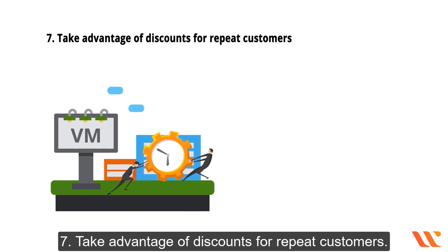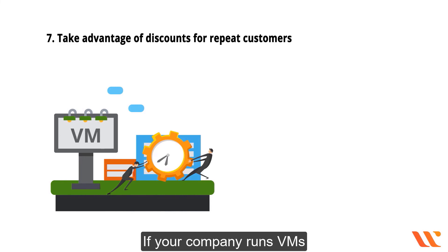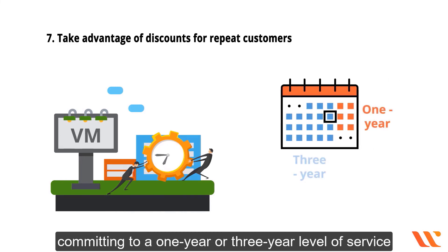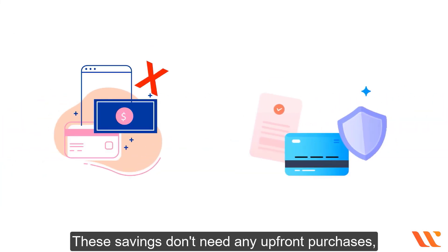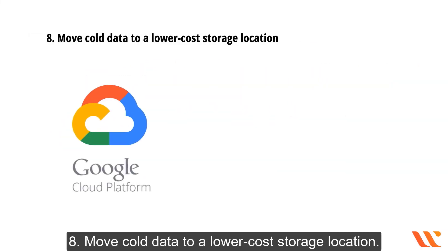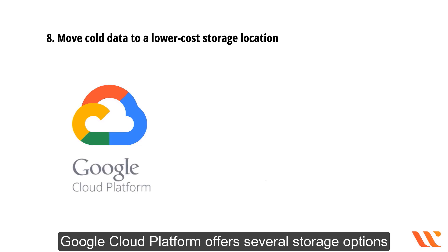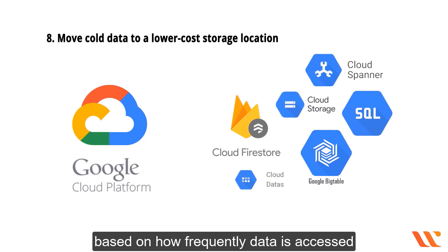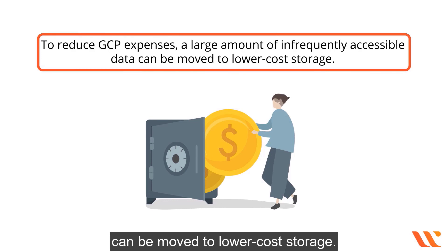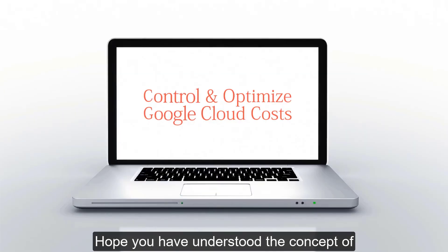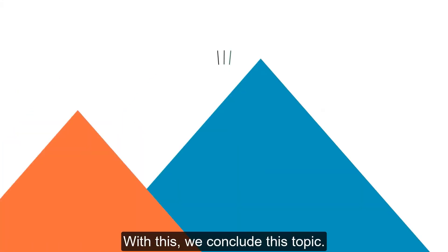Best practice seven: take advantage of discounts for committed use. If your company runs VMs with predictable workloads, committing to a one-year or three-year service level can save you up to 57 percent on pay-as-you-go GCP pricing, with no upfront purchases required. Best practice eight: move cool data to a lower-cost storage location. Google Cloud Platform offers several storage options based on how frequently data is accessed, and moving infrequently accessed data to lower-cost storage can significantly reduce GCP expenses.